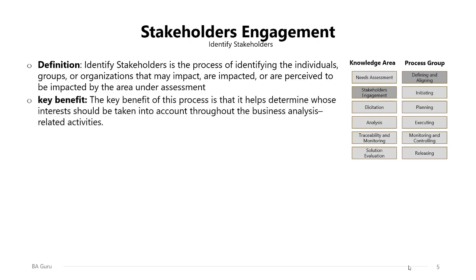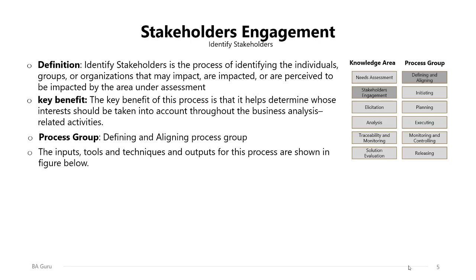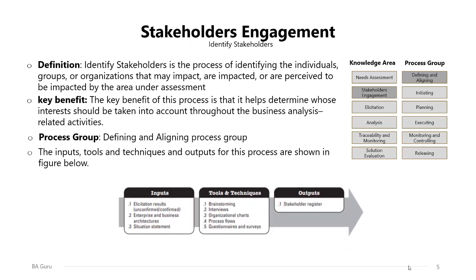The key benefit of this process is that it helps determine whose interests should be taken into account throughout the business analysis related activities, and it is part of the defining and aligning process group. The inputs, tools, techniques, and outputs of this process are shown in the figure. We will have three inputs: elicitation results, enterprise and business architectures, and situation statement. We will have five tools and techniques, and one key output which is the stakeholders register.